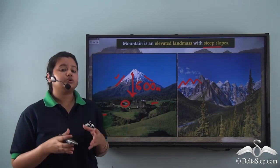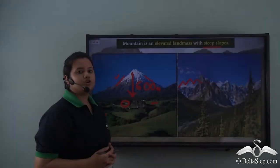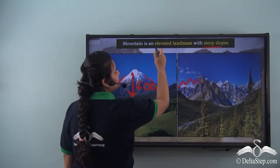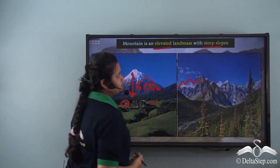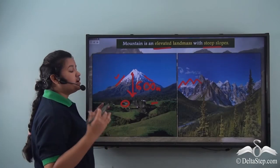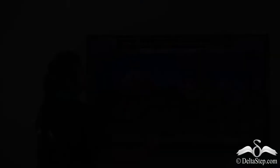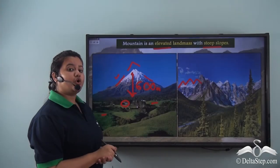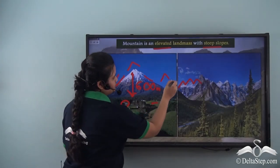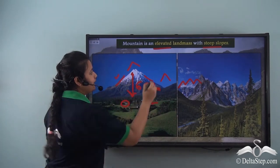So how can you distinguish a mountain from other landforms? A mountain is an elevated landmass with steep slopes, and mountains also have a confined summit or peak — you will always find mountains have these conical structures, which is called a summit or a peak.